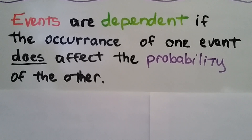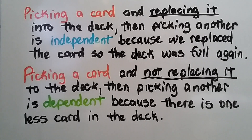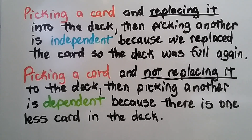Events are dependent if the occurrence of one event does affect the probability of the other. As we discussed in the previous video, picking a card and replacing it into the deck, then picking another, is independent because we replaced the card so the deck was full again. But picking a card and not replacing it, then picking another, is dependent because there is one less card in the deck.